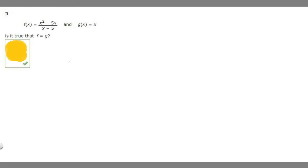In this problem, we're told that f(x) is equal to x squared minus 5x over x minus 5, and g(x) is equal to x. And we're asked, is it true that f equals g?